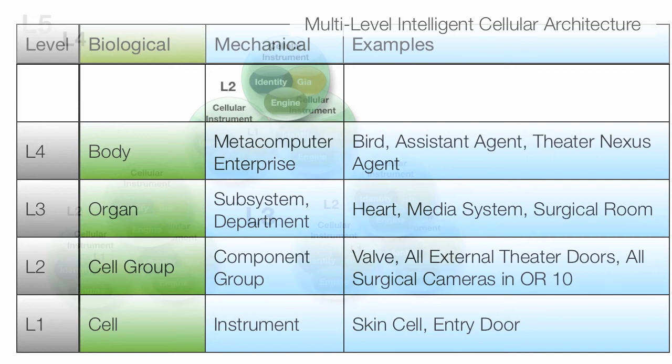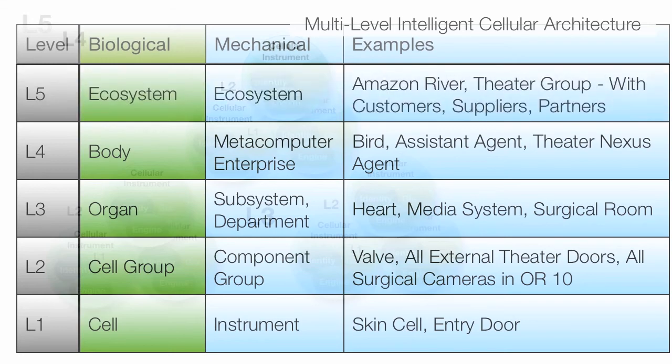Or the audio-visual system can be part of a larger theater, intelligent theater. Or a bird is a level 4 system. We are level 4 systems. The assistant agent that will help you in your mobile and do everything you need it to do. That's a level 4 entity.